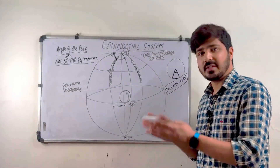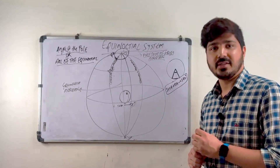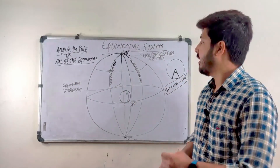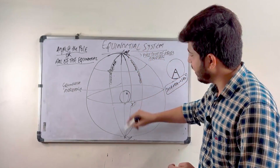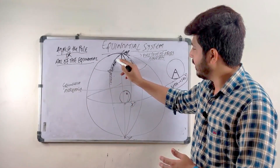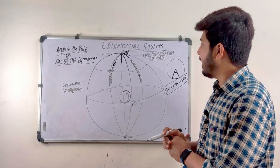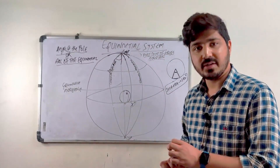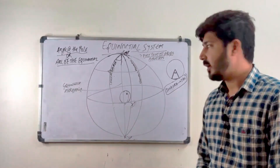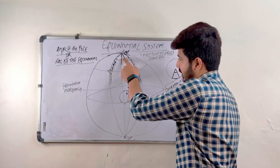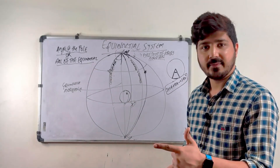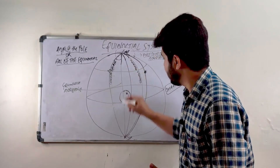Now we will move on to the third definition — that is GHA. The GHA is the angle at the pole or arc of the equinoctial between the Greenwich meridian — you can see this is the Greenwich meridian I have already drawn — and the celestial meridian of the body. This angle is measured westwardly from Greenwich. So the GHA is in the westward direction from the Greenwich meridian to the celestial body.